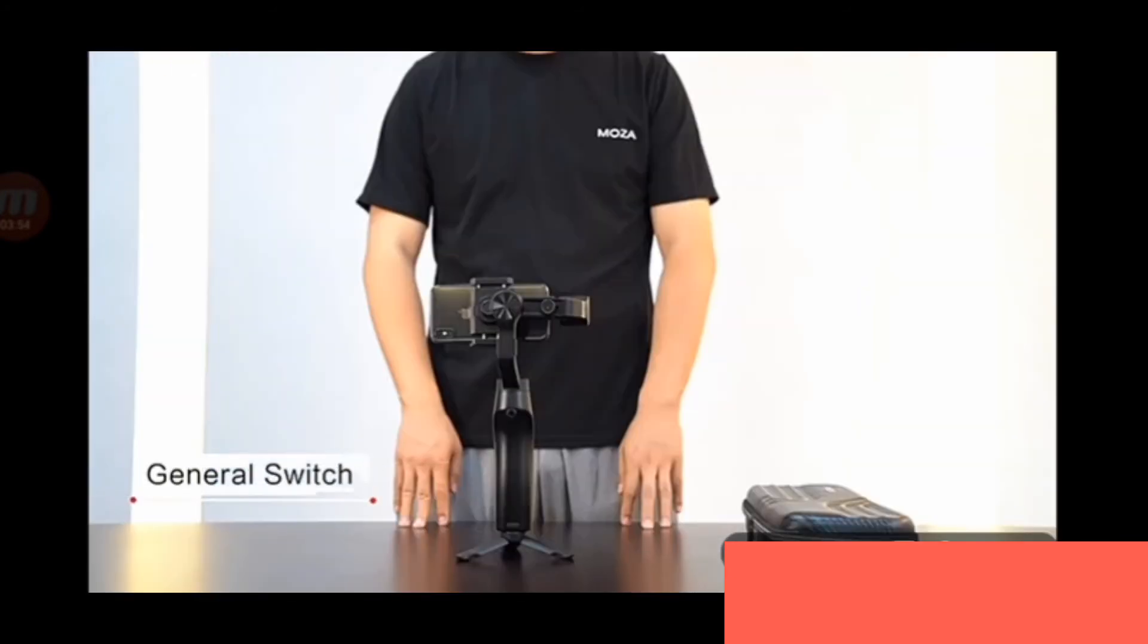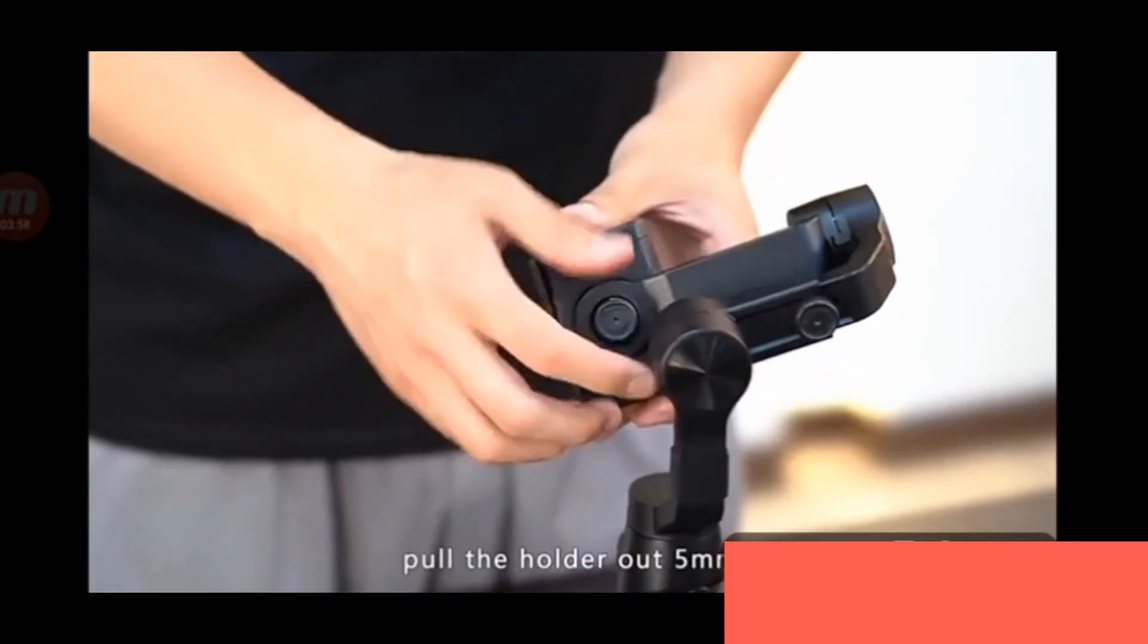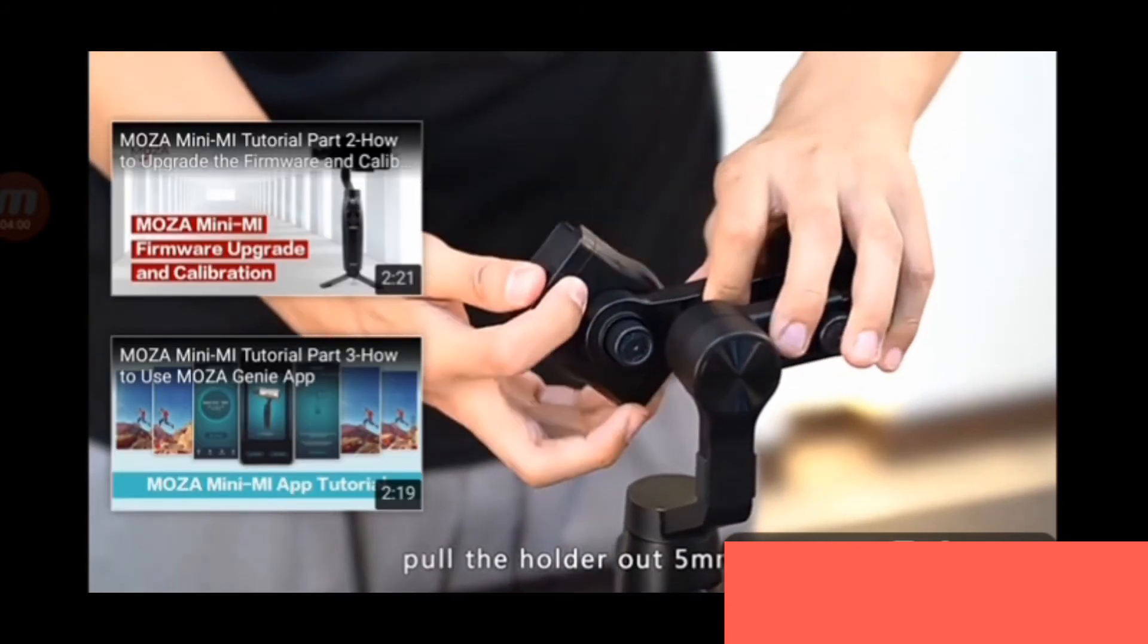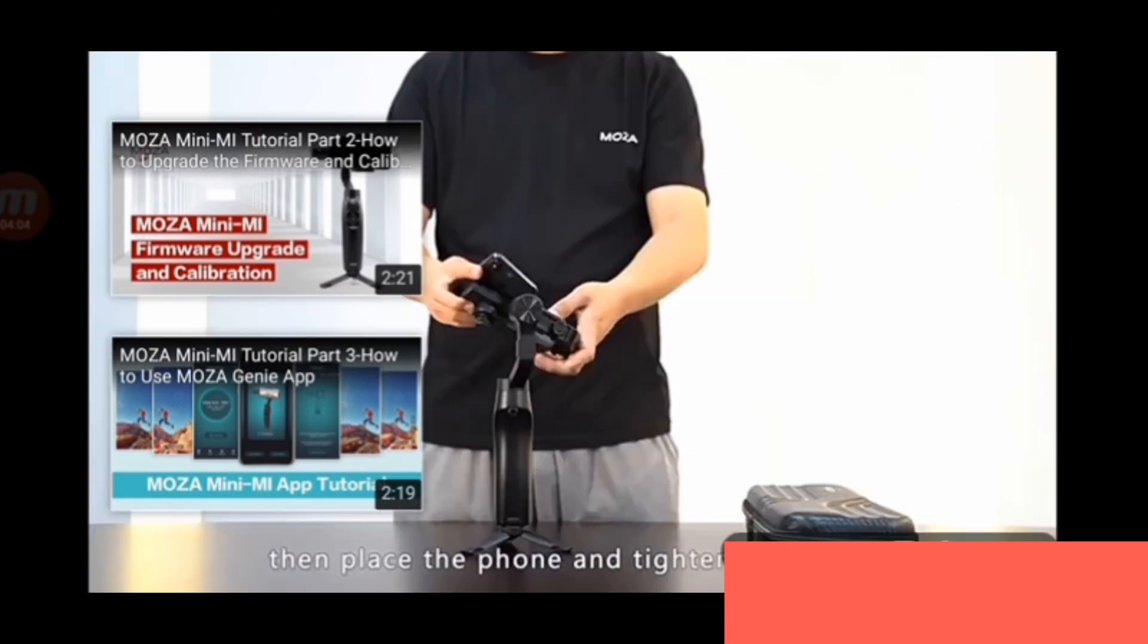General switch: loosen the knob screw on the back of the cell phone mount. Pull the mount out 5mm, rotate it 90 degrees clockwise, and then place your phone in and tighten the screw.